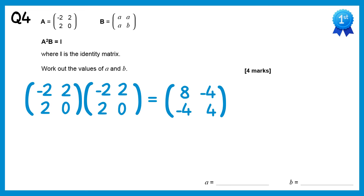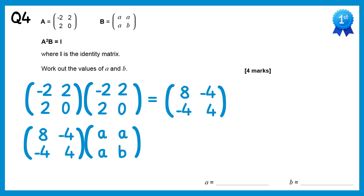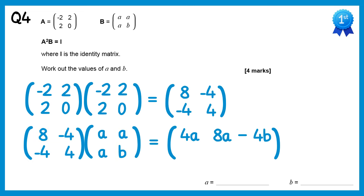This represents A squared; we wanted A squared B. So we take this matrix and multiply it by matrix B, which is a, a, a, b. Doing 8, negative 4 with a, a: 8 times a is 8a, and negative 4 times a is negative 4a, giving 8a take 4a which is 4a. Then 8, negative 4 with a, b: 8 times a is 8a, and negative 4 times b is negative 4b, giving 8a take 4b. Then negative 4, 4 with a, a: negative 4a plus 4a is 0. And negative 4, 4 with a, b: negative 4 times a is negative 4a, and 4 times b is 4b, giving negative 4a plus 4b.